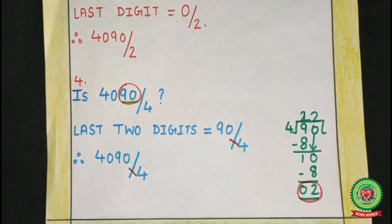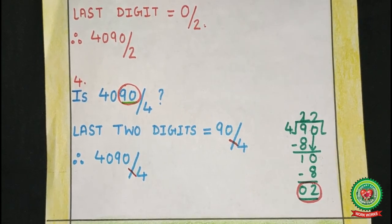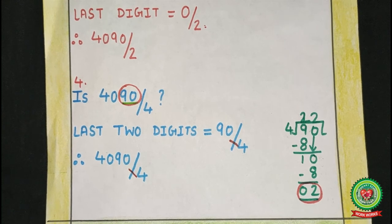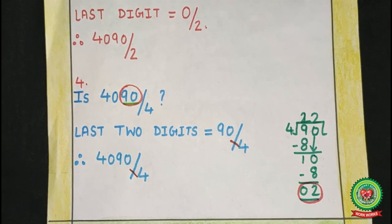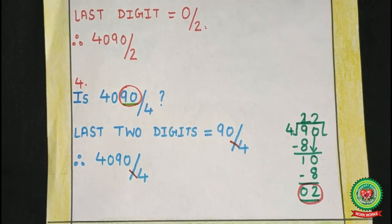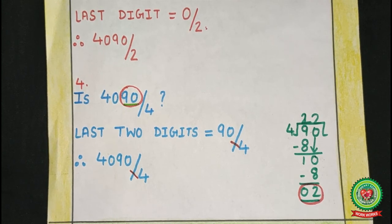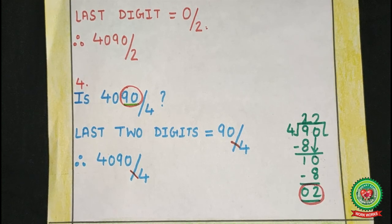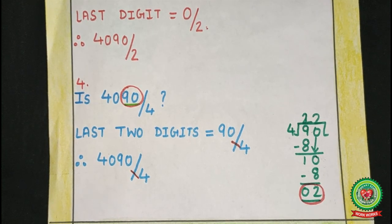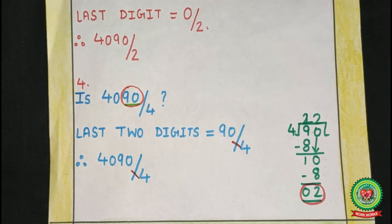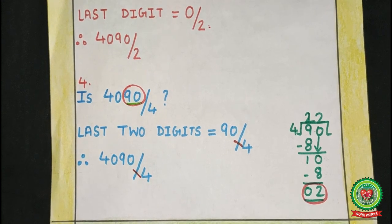Today we have learnt about the divisibility rule of 2 and 4. I hope you are able to do the worksheet of related sums that is given in your Snap Homework. I am guiding you all to go through the YouTube links that are already mentioned in your Snap Homework. Thank you.